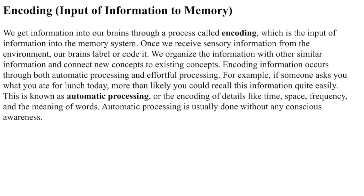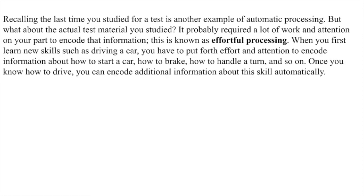For example, if someone asks you what you ate for lunch today, more than likely you could recall this information quite easily. This is known as automatic processing, or the encoding of details like time, space, frequency, and the meaning of words. Automatic processing is usually done without any conscious awareness. Recalling the last time you studied for a test is another example of automatic processing.